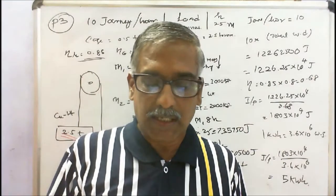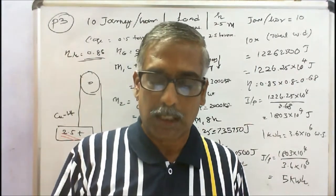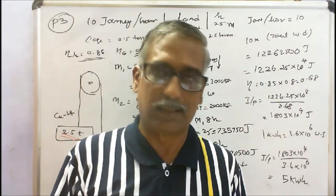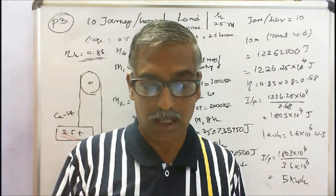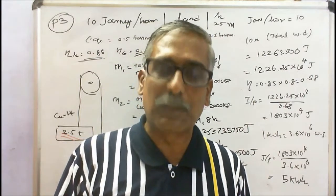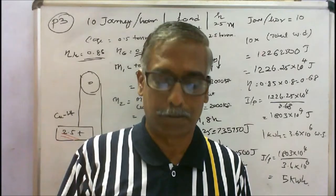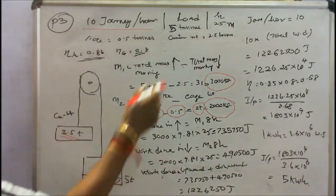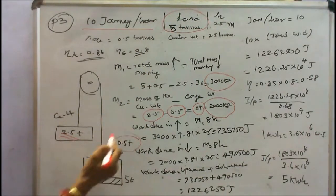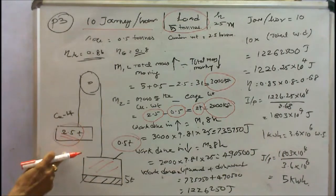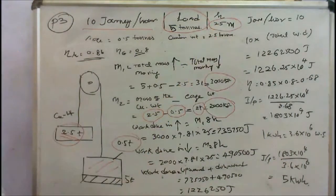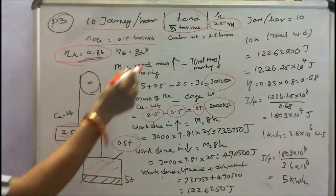The third problem: An electric lift in the college makes 10 journeys per hour. A load of 5 tons is raised by it through a height of 25 meters and it returns empty. The weight of the cage is 0.5 tons and that of the counter weight is 2.5 tons. The efficiency of the hoist is 0.85 and that of motor is 0.8. Calculate the energy consumption per hour. In the third problem, the load is given 5 tons, cage weight 0.5 tons, counter weight 2.5 tons. The lift takes 10 journeys per hour. Height is 25 meters. Every value is given. Hoist efficiency is 0.85 and motor efficiency is 0.8.